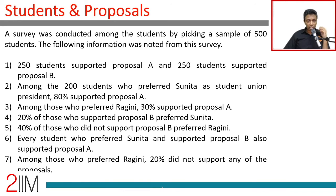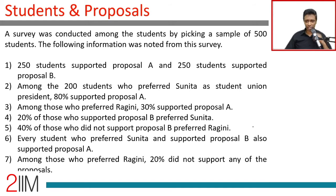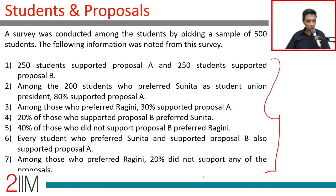A survey was conducted among students by picking a sample of finite students. The following information was noted: 250 liked proposal A, 250 liked proposal B. Among the 200 who preferred Sunita for student union president, 80% supported proposal A. Among those who preferred Ragini, 30% supported proposal A. 20% of those who supported proposal B preferred Sunita. I want a framework to put the data in before reading all the constraints.